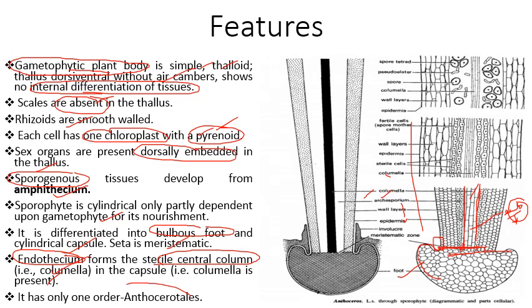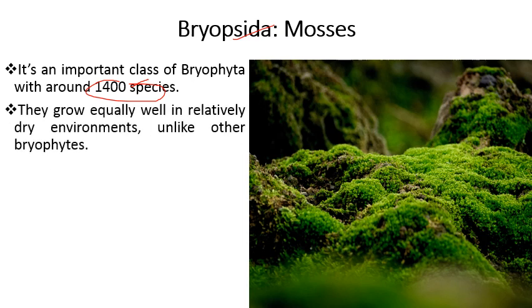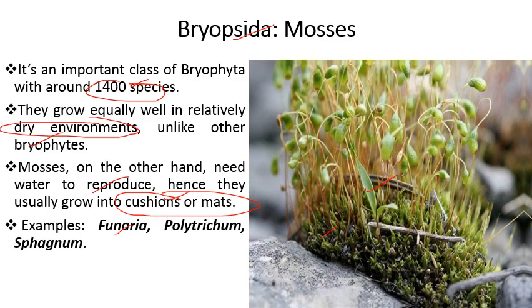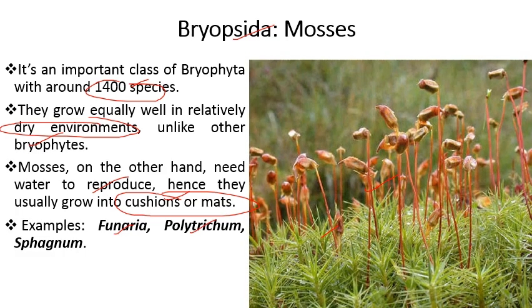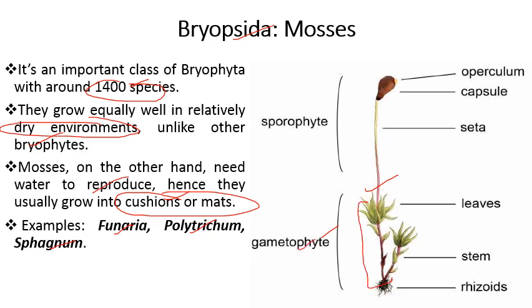Anthocerotopsida has only one order: Anthocerotales. The next class is Bryopsida — the most advanced class of bryophytes, with approximately 1400 species. They can grow in relatively dry environments unlike other bryophytes and form mat-like or carpet-like growths. Examples include Funaria, Polytrichum, and Sphagnum. The main plant body is the gametophyte; the sporophyte sits on top and is somewhat parasitic, producing haploid spores.